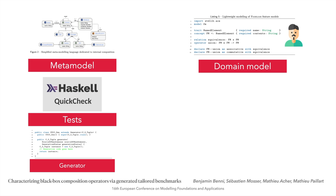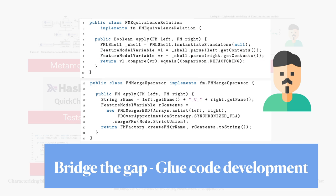In this example, we need to have a feature model provider that will produce pairs of feature models. We generate a skeleton of the generator that produces model elements, so the developer only has to fill the gap. As we do not know how to automatically produce meaningful feature models for the targeted operator — the merge union — the developer has to fill the gap. Then finally, a skeleton of the equivalence relation and the composition operator has been generated. Here, the developer has to fill in the gap by developing the glue code to call their actual operator implementation, and also has to develop code to state how to compare two feature models.